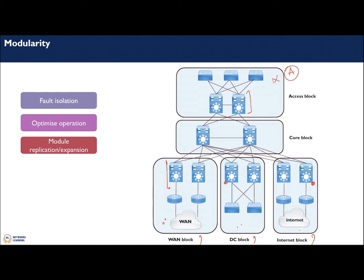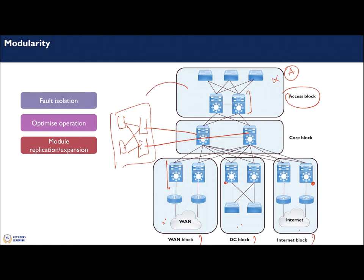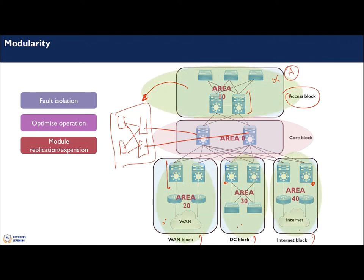Modularity also gives us the opportunity for module replication. For example, if building A has an access block and a new building B is acquired, you simply copy-paste the access block design for the new building. It also benefits routing design — you could have OSPF area zero for the core and put each access block, internet block, and DC block into different OSPF areas.